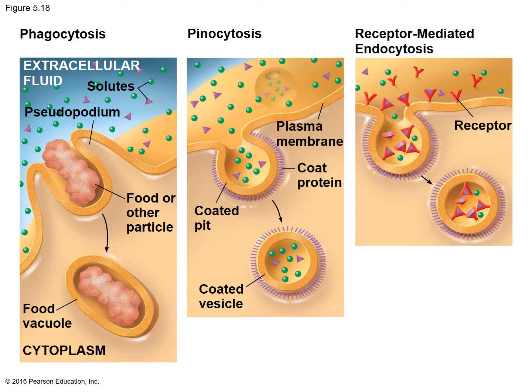This is figure 5.18, exploring endocytosis in animal cells. Notice that in phagocytosis, you have a bunch of different solutes out there in the extracellular fluid — those are the green and purple colored shapes. Then they're showing you a food particle that has been invaginated by the cell membrane; it's being taken in and once it goes in, it has a membrane around it. They're calling this a food vacuole, but I'd rather call it a food vesicle since vacuoles are specific to plant cells.